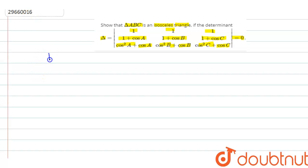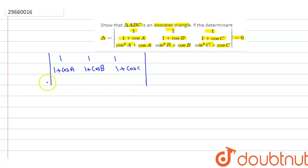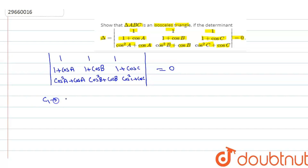Solve करते हैं इसको. So हमें determinant दिया है: rows [1, 1, 1], [1+cosA, 1+cosB, 1+cosC], [cos²A+cosA, cos²B+cosB, cos²C+cosC] equal to 0. We will apply column operations C1 minus C3 and C2 minus C3.